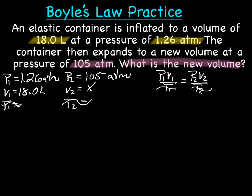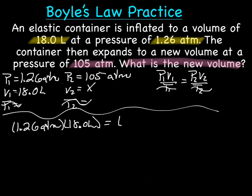So now all we have to do is plug this in. So we're going to have P1 times V1, or 1.26 ATM times 18 liters, equals P2, which is 105 ATM, times V2, which is our X. Alright, when we multiply on the left, I came up with 22.68 ATM liters equals 105 ATM times X.